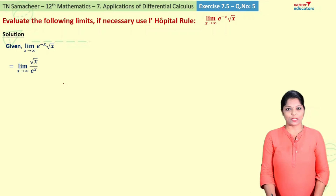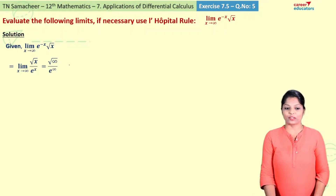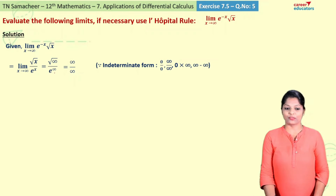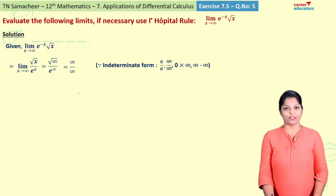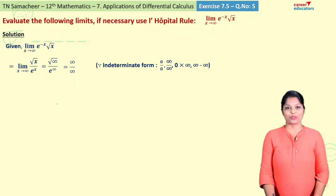Now applying the limit, we get square root of infinity divided by e power infinity. Square root of infinity gives infinity, and e power infinity is also infinity. So we get infinity divided by infinity, which is an indeterminate form. Therefore, we have to apply L'Hôpital's rule.